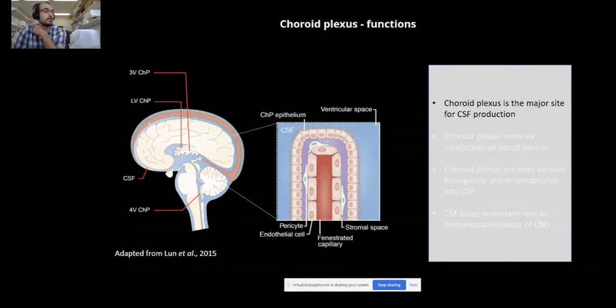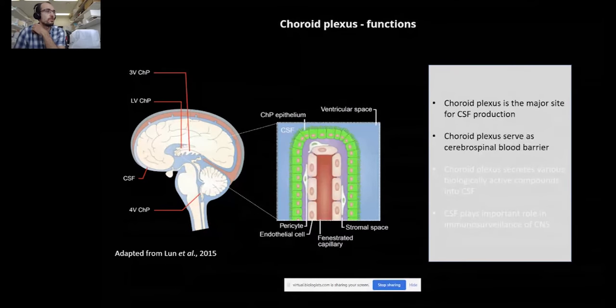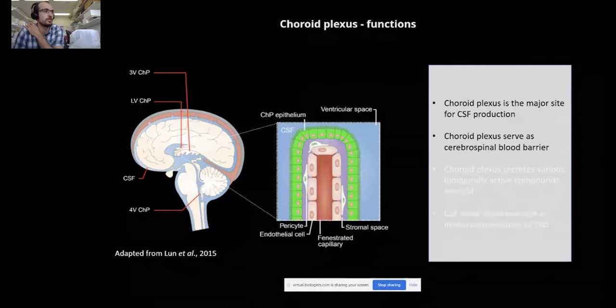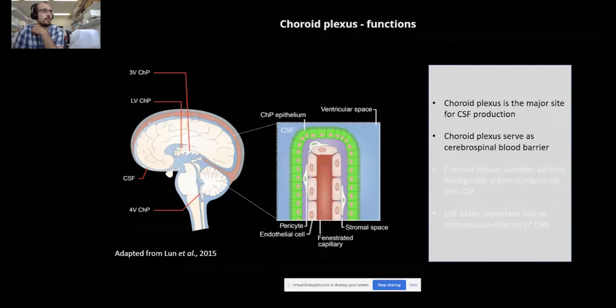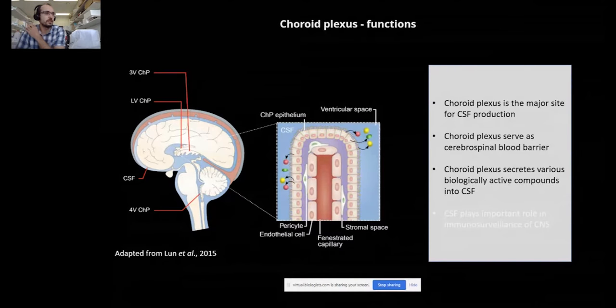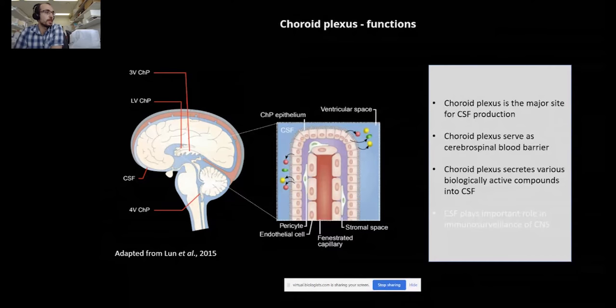Choroid plexus represents a versatile organ central to the proper function of the central nervous system as the major site for the production of cerebrospinal fluid. Furthermore, due to the unique properties of its epithelium, choroid plexus also establishes an important CNS-blood interface serving as a cerebrospinal-blood barrier. Choroid plexus also shapes CNS function by releasing a wide array of biologically active compounds, and it should be noticed that choroid plexus plays an important function in the immunosurveillance of the central nervous system.